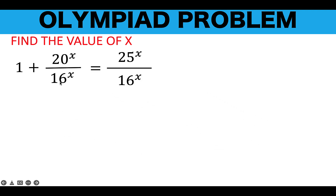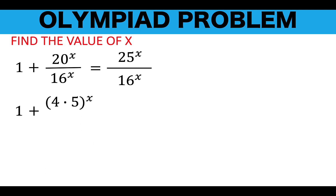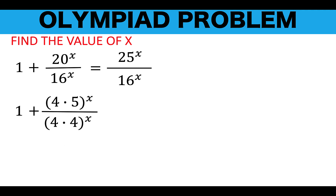Notice that 20 and 16 have a common factor of 4, but we cannot just cancel that out unless we can separate 20 raised to x into two exponential numbers. Let's rewrite 20 first as 4 times 5, so we now have the quantity 4 times 5 raised to x. For the denominator, we write 16 as the quantity 4 times 4, raised to exponent x. Also, 25 can be written as 5 times 5, so we write it as 5 squared raised to x, and the denominator is 4 squared raised to x.